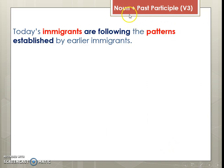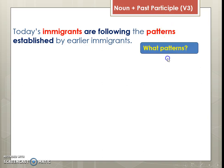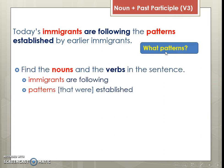Sometimes we see a noun and a past participle, or verb three: 'Today's immigrants are following the patterns established by earlier immigrants.' 'Patterns established' looks like simple past, but patterns really can't do anything — that's a hint we're looking at the passive form. We have to ask ourselves: what patterns? The patterns that were established by earlier immigrants. So: 'today's immigrants are following the patterns that were established by earlier immigrants.'